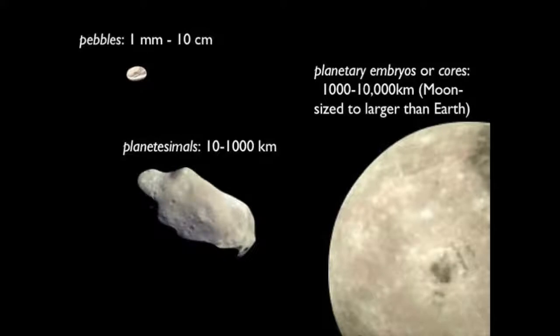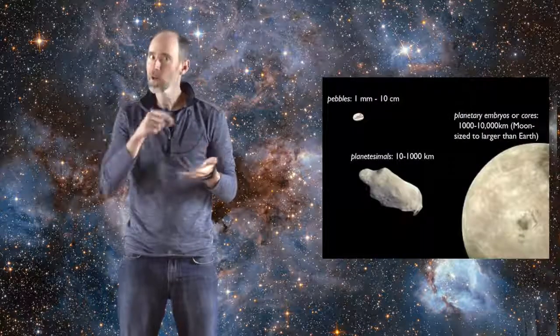Pebbles are small objects, typically the size of a grain of sand up to a small pebble. These are objects that drift very quickly within the disk.